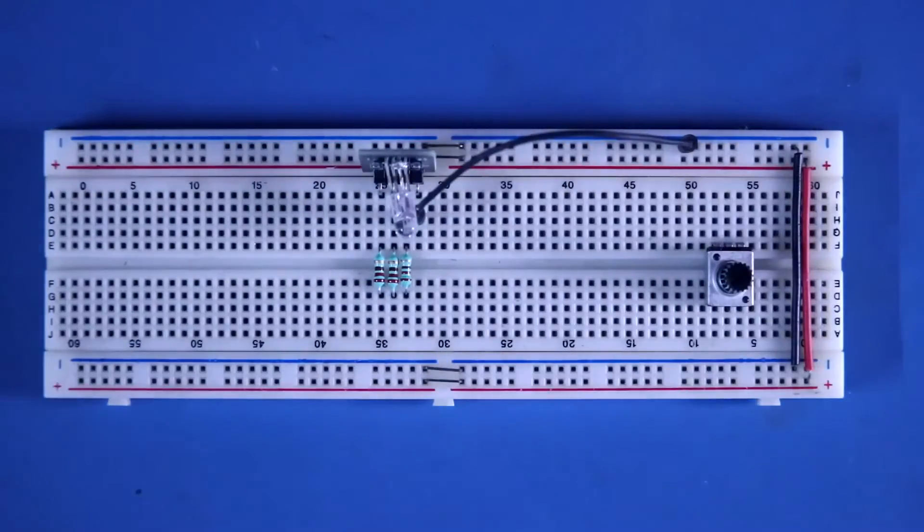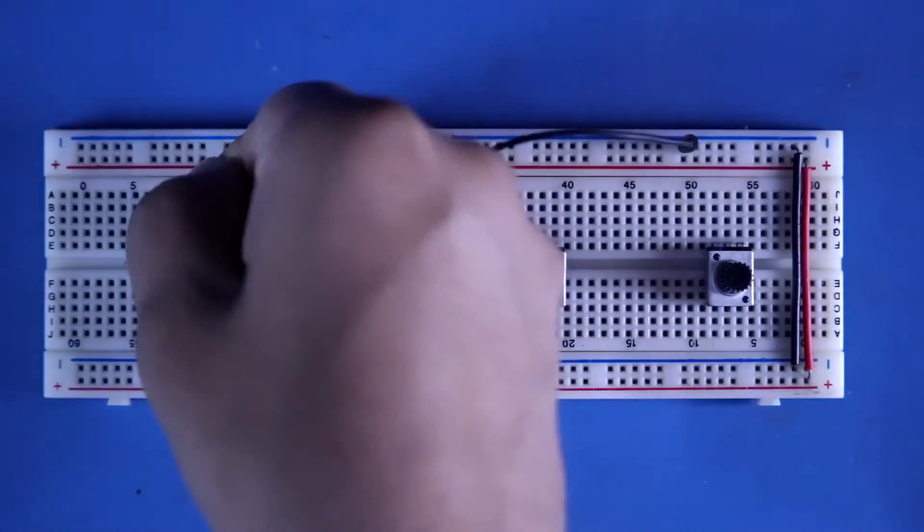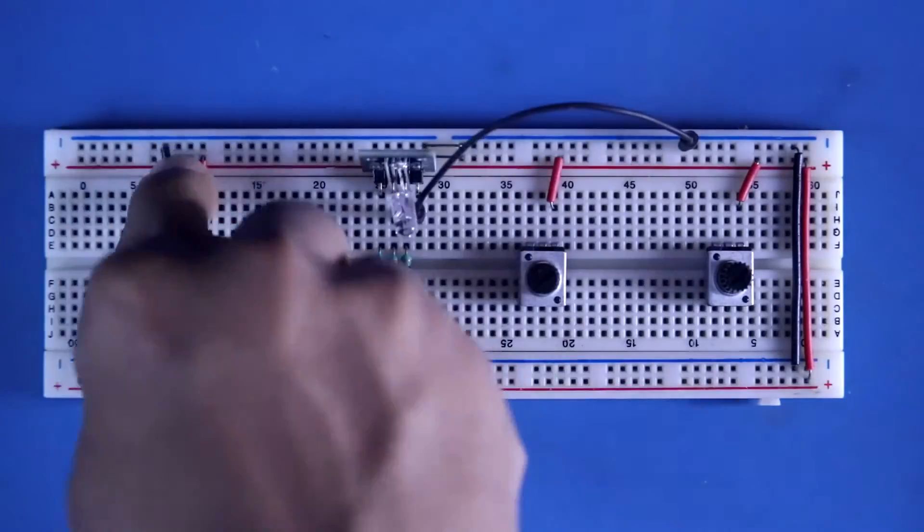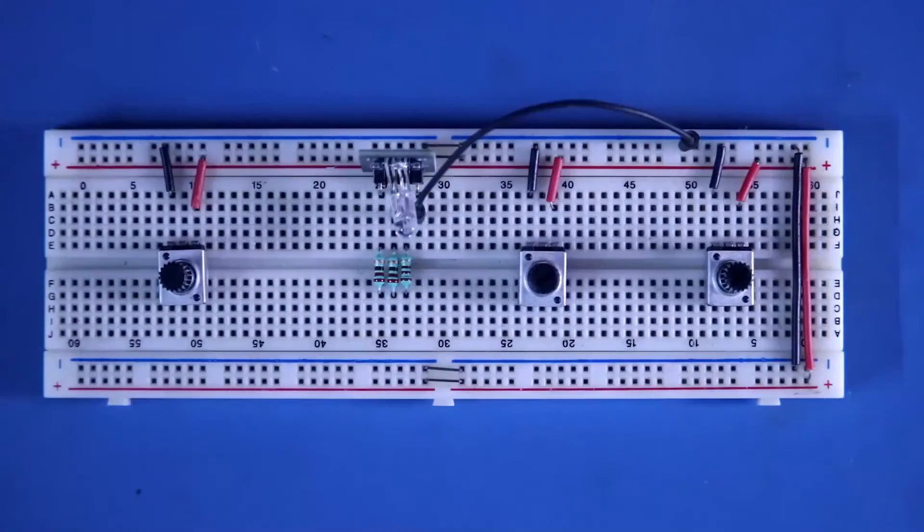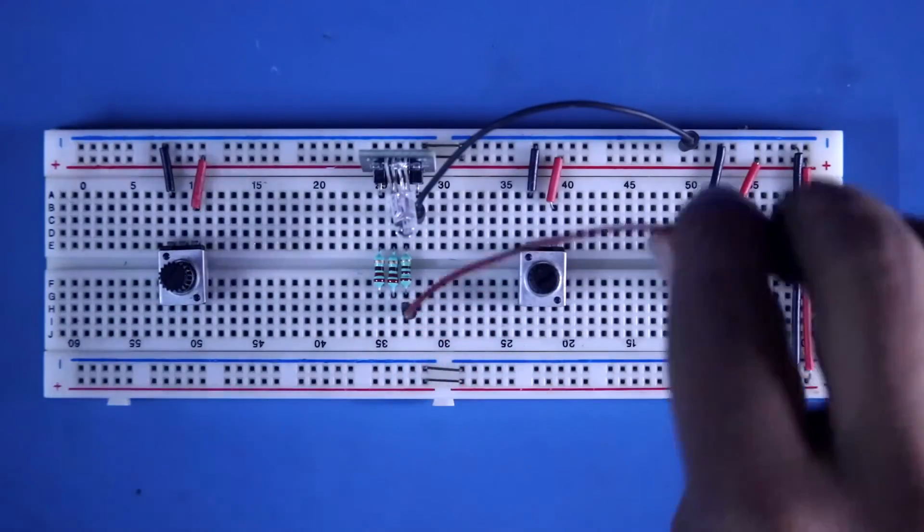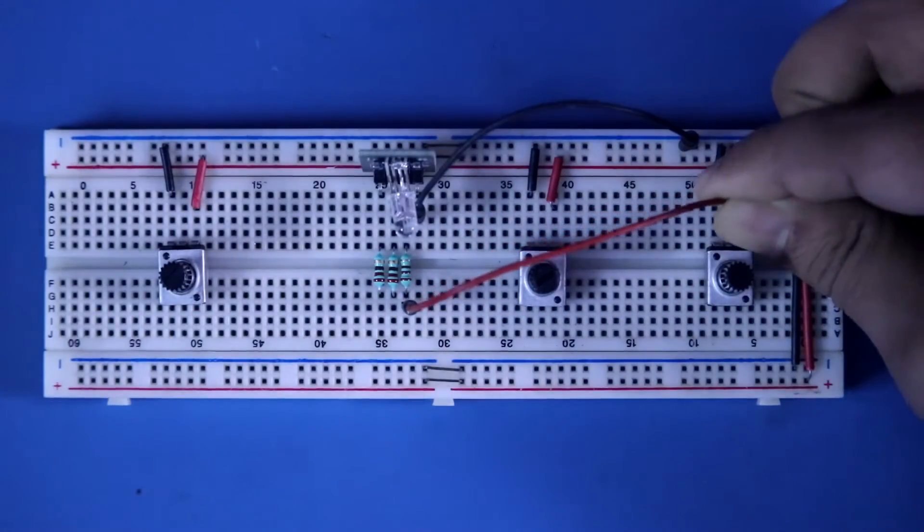Now it's time to connect the potentiometer. Left and right pin of the potentiometer should be connected to the positive and negative rail. This is R. I am connecting this to the middle pin of 3rd potentiometer.